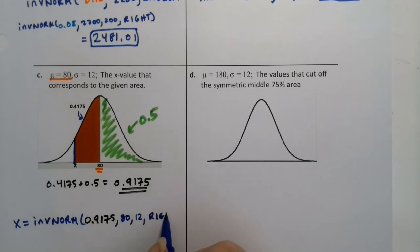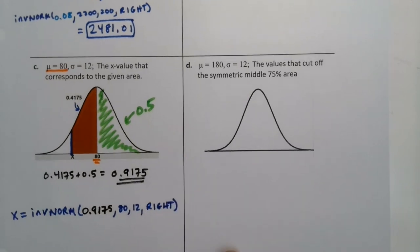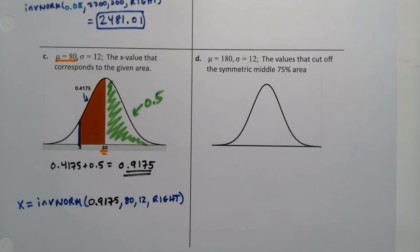0.9175 comma 80, 12, and right. See it? So if you have a new calculator, you can actually do this. You can just say, hey, 9175, 80, 12, and right. But if you have an older calculator, you don't have that option. So you're going to have to do, oh, and StatCrunch will work with this also.